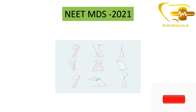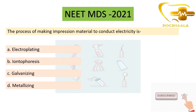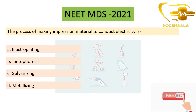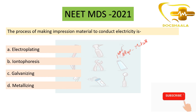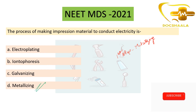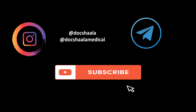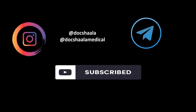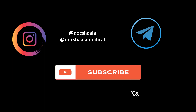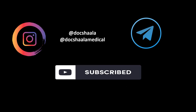Coming back to the question — the process of making impression material to conduct electricity is metallizing, which is the first step used to make electroform dies. So the answer is option D — metallizing. If you like our video, do subscribe to our YouTube channel. You can also follow us on Instagram at DocShala for dental content and DocShala Medical for medical content, and find us on Telegram. Thank you.